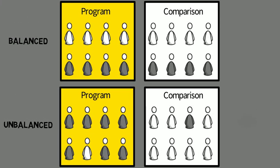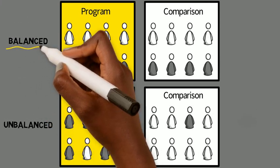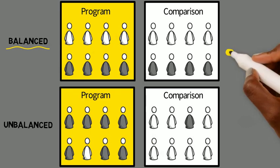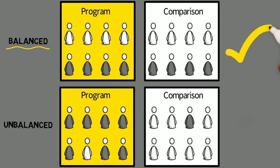Because the people in each group are picked at random, the groups will be pretty similar when they enter the study. That way, if they have different outcomes over time, we can feel confident that the outcomes are caused by the services being studied, rather than differences between the two groups.